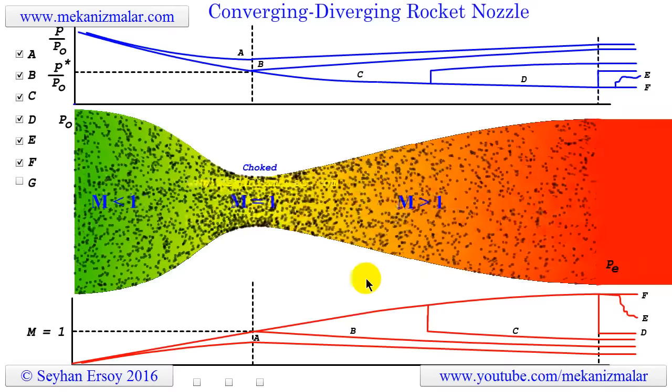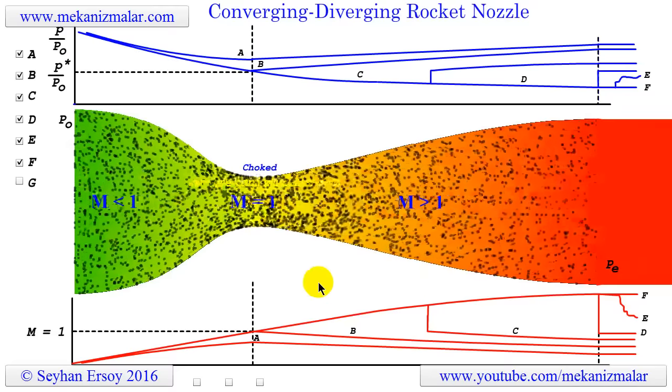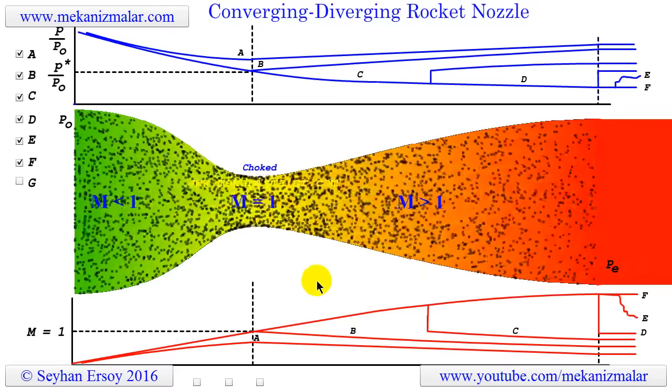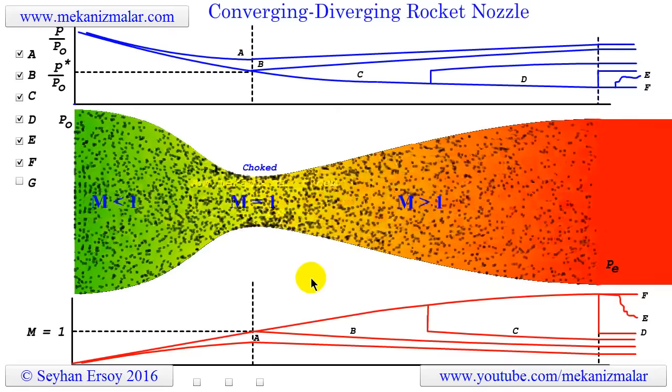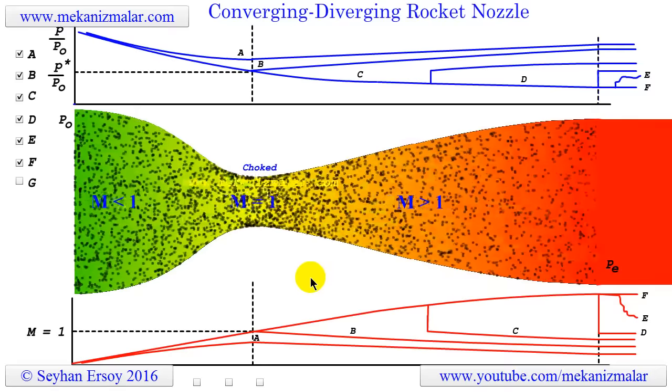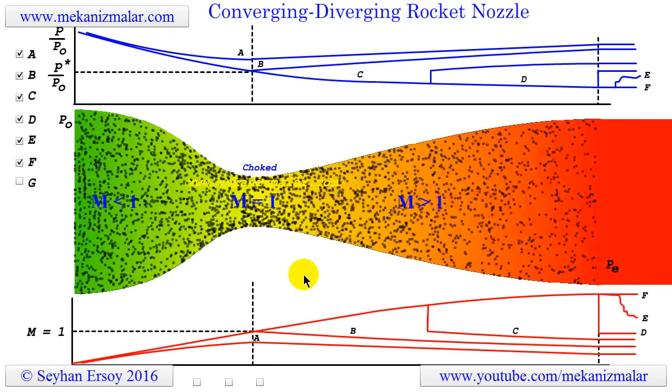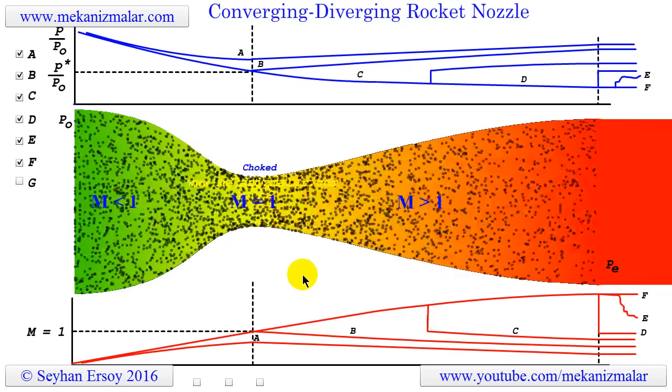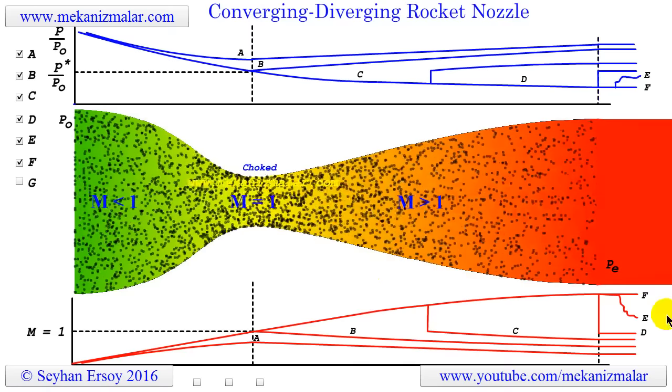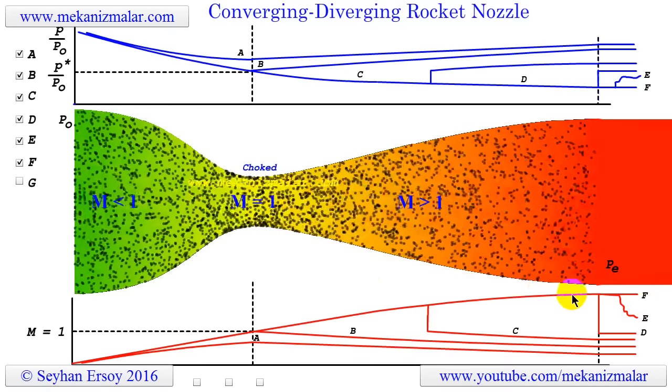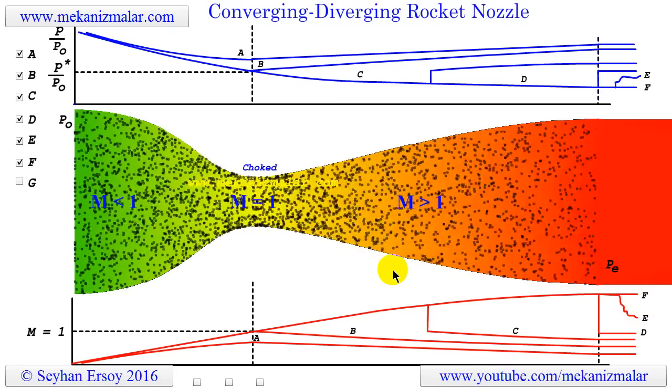The reason we used an inefficient flow for case E rather than case F, which is optimal, becomes clearer now. Since the rocket is ascending after liftoff, the outside pressure begins to fall from case E pressure towards case F pressure. This takes the rocket nozzle towards its optimum design condition, as seen here.